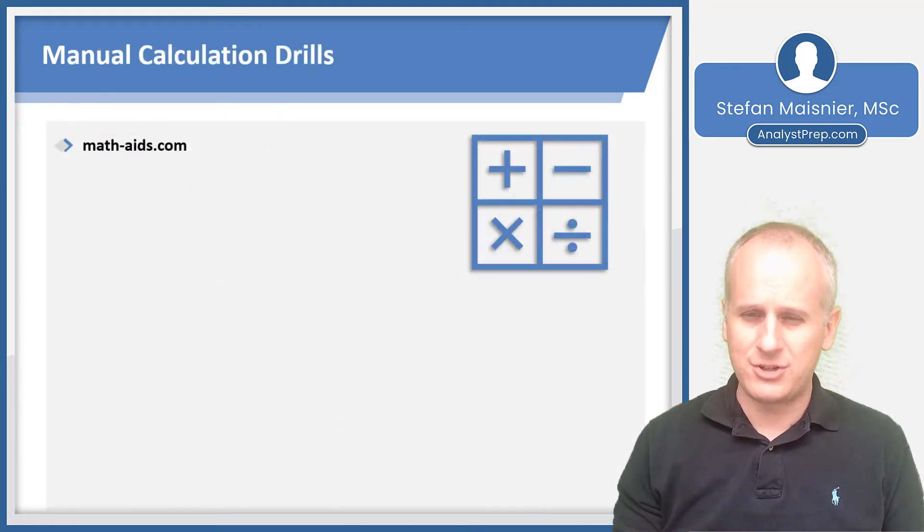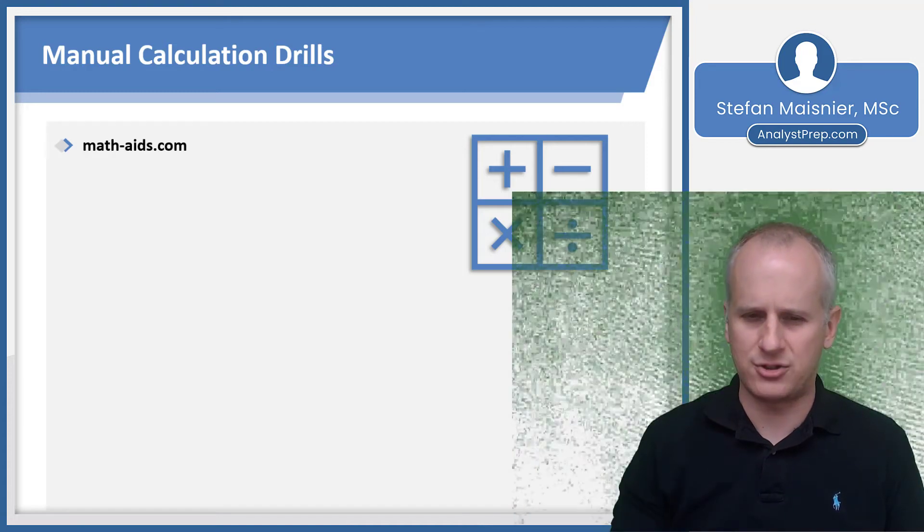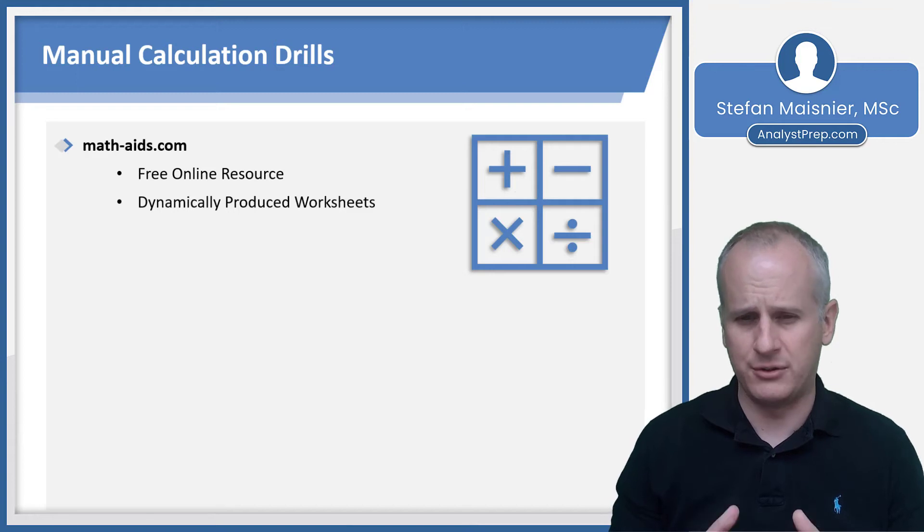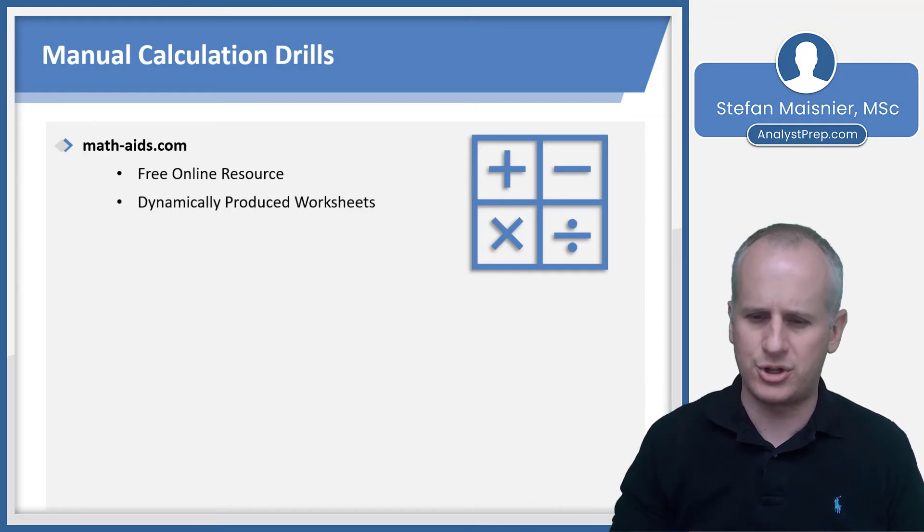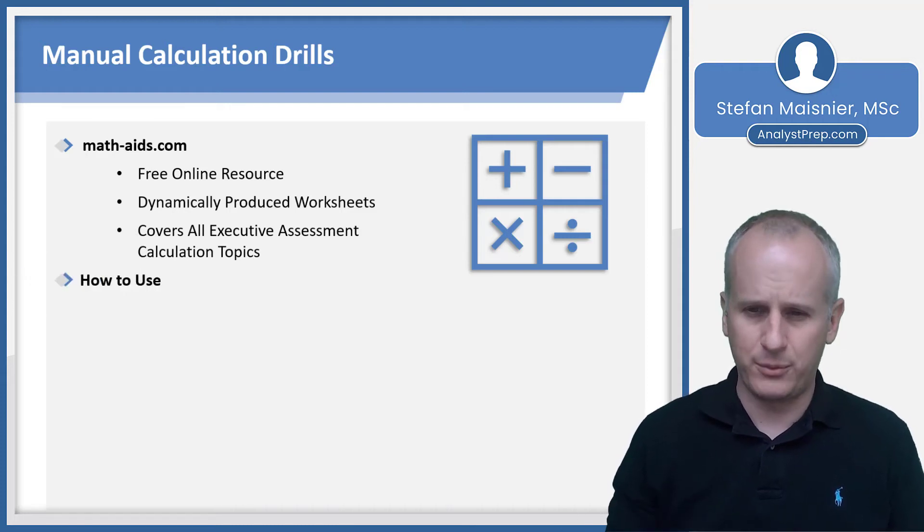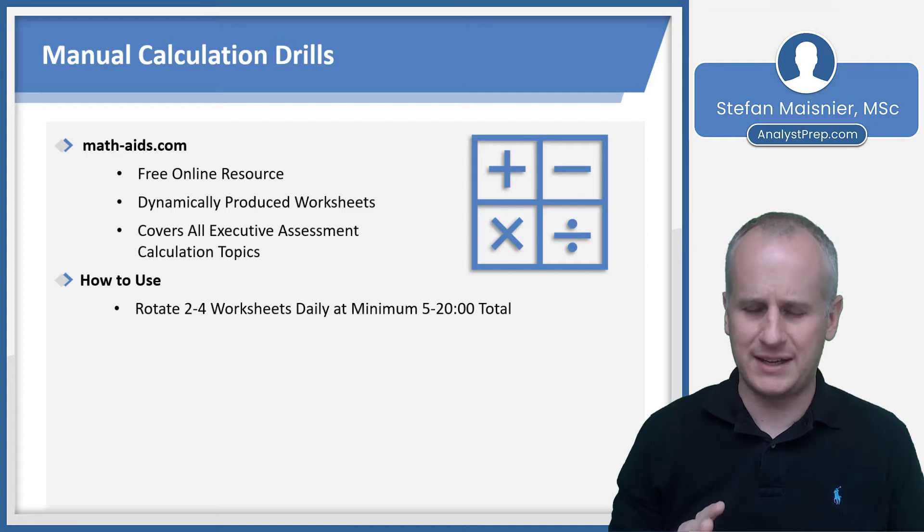I mentioned the website math-aids.com earlier in this lesson. It is just a great free resource for you to practice manual calculation for the quantitative section of this exam. They're dynamically produced worksheets, so what that means is you can never run out of worksheets on math-aids.com. There's just a giant left-hand navigation and you can click on any of the topics and you'll be able to create brand new worksheets of whatever content you're covering. All of the executive assessment calculation topics are covered at math-aids to some degree. How do we use this resource? First you want to try to do two to four worksheets a day, and they shouldn't take you that long per worksheet. If you go to the website the first time, it'll probably prompt you with what grade you're working on. You can just ignore that and x out of that pop-up. There are quite a few pop-ups because it's a free resource, but you'll want to try to work through two to four worksheets a day. Shouldn't take you more than five to 20 minutes in total.